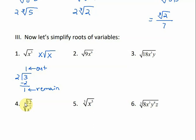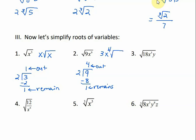For number 2, the square root of 9 — the number 9 — is 3, so 3 gets to come on the outside. Then for x to the 9th power, we take the number 9 and divide it by 2. 2 will go into 9 four whole times — 4 times 2 is 8 — and there's 1 left over. So 4 come out, meaning x to the 4th comes out, and 1x remains under the radical.